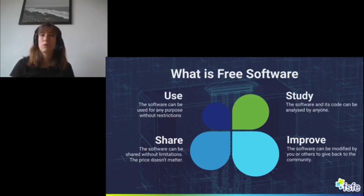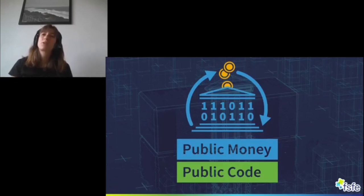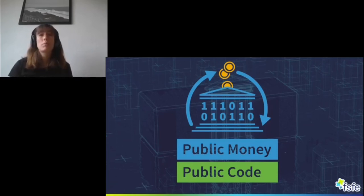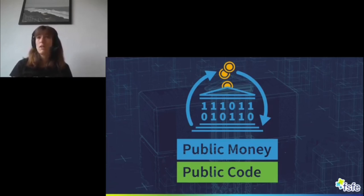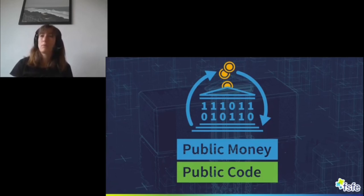So what has this to do with Public Money Public Code? The Public Money Public Code campaign wants legislation requiring that publicly financed software developed for the public sector should be made publicly available under a free and open source software license. So software paid for by taxpayers' money and developed for the public sector should be made available under a free and open source software license, thereby granting the four freedoms. This is the core aim of Public Money Public Code.